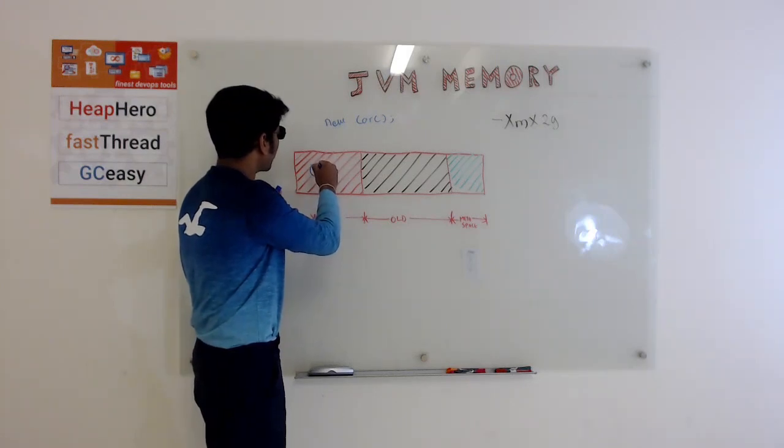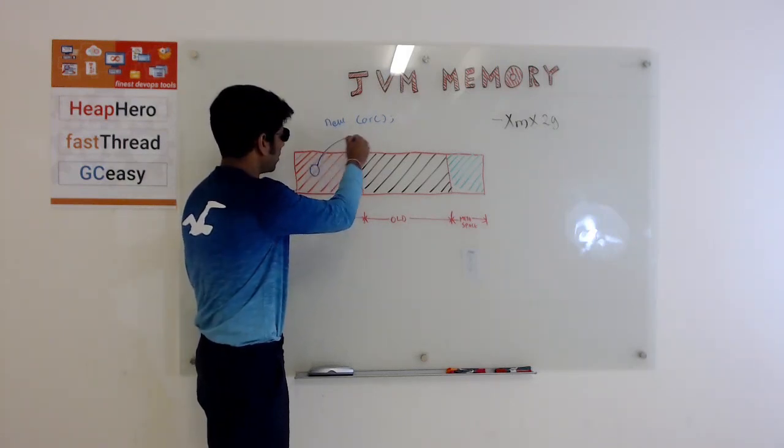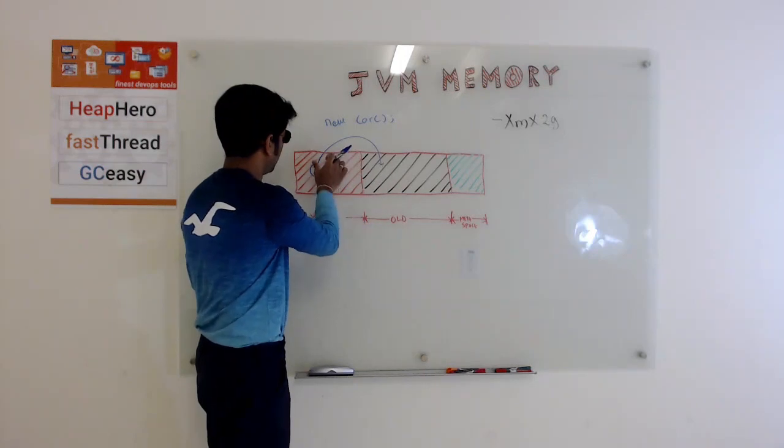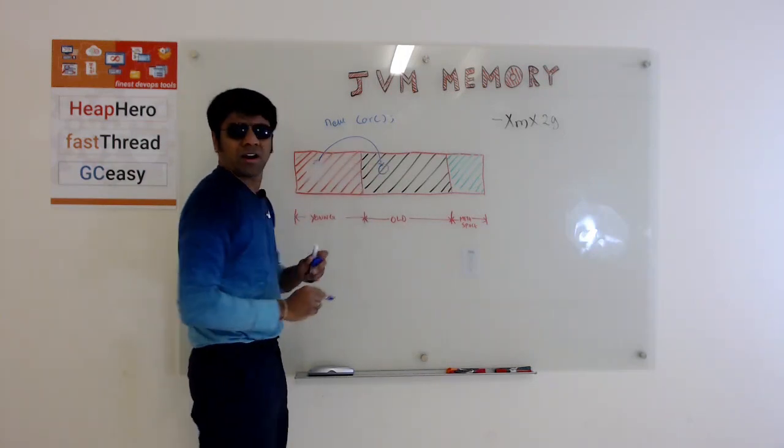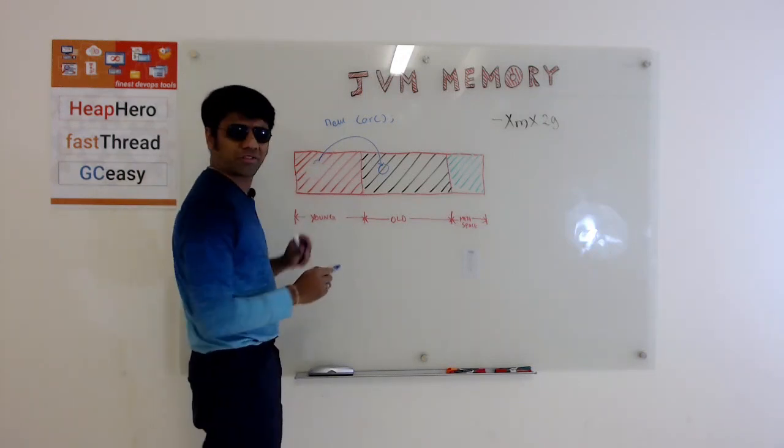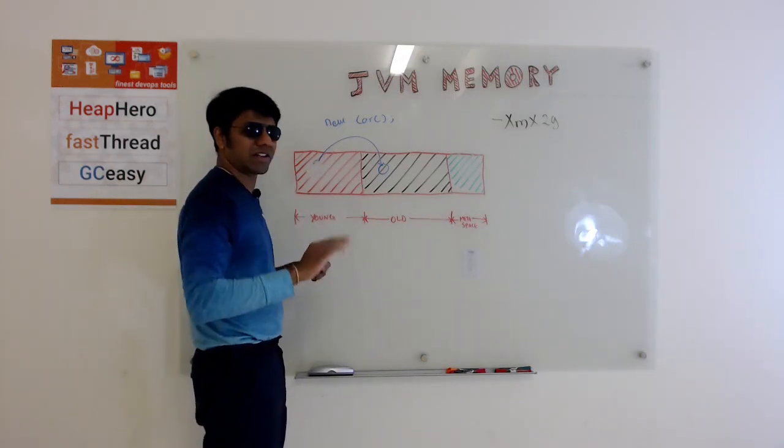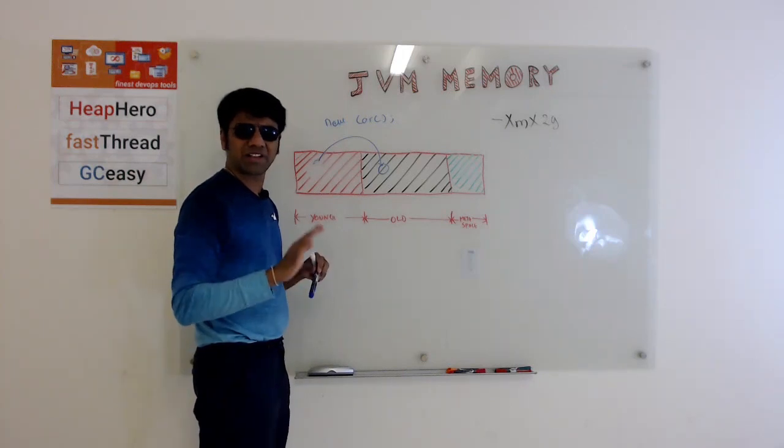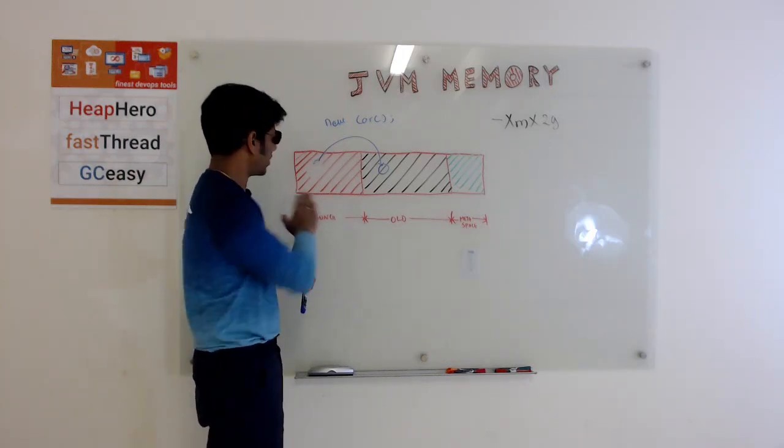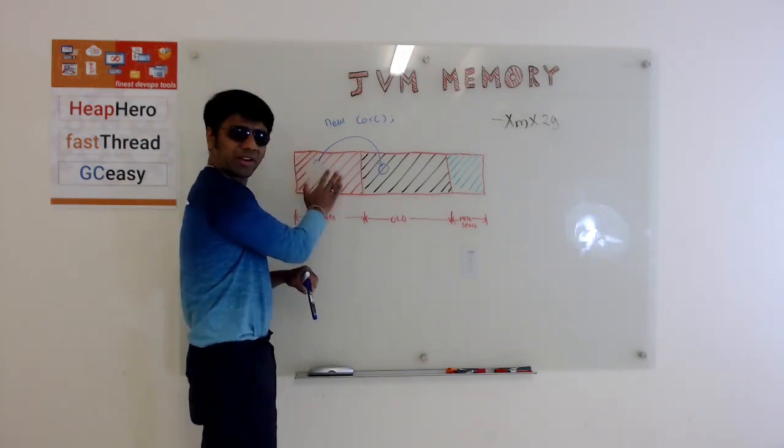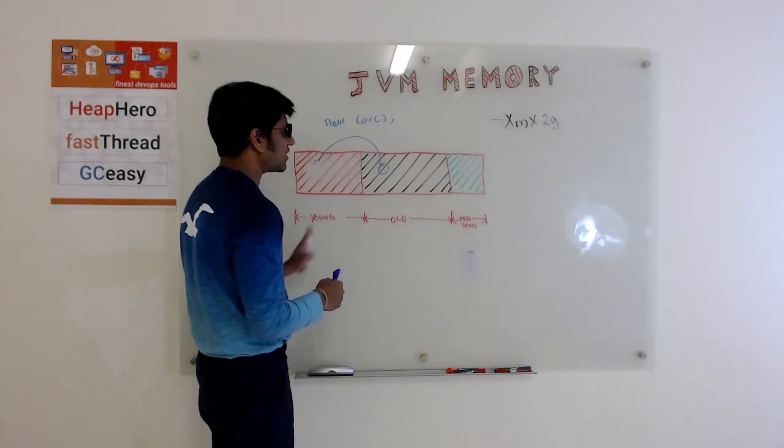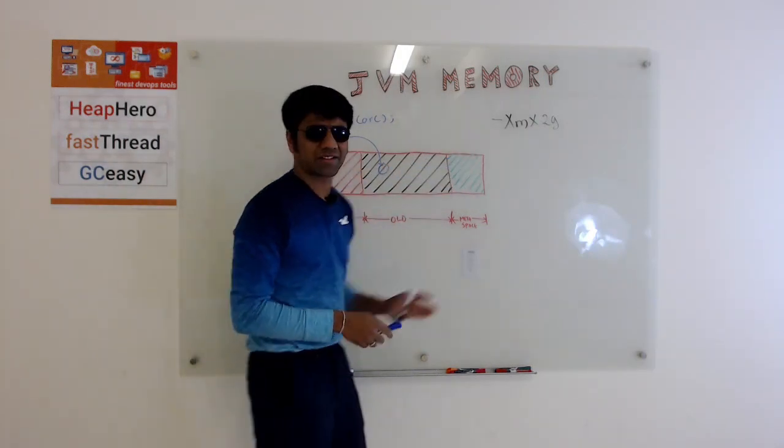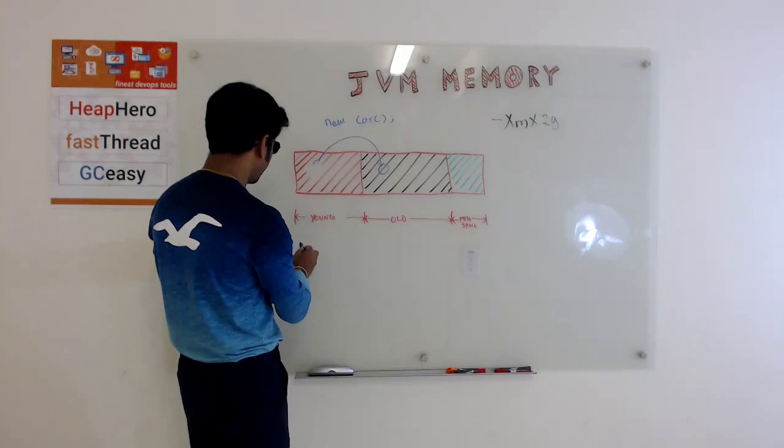But most of the objects are short-lived objects. There's a statistic that something like 80 percent or more of your objects are short-lived objects, so they get created here and then they die down in young generation. They never get promoted to the old generation. So when someone defines XMX, what they're defining is the size of the young generation and old generation alone.